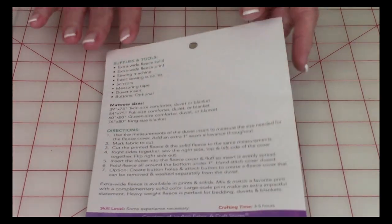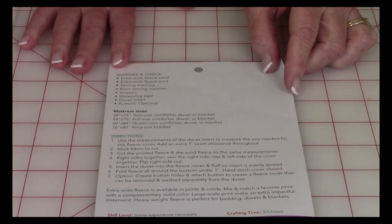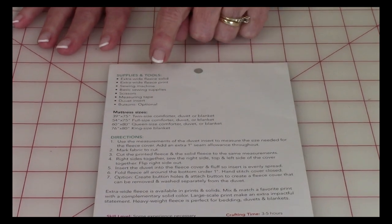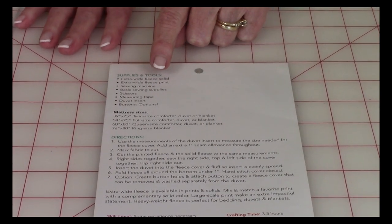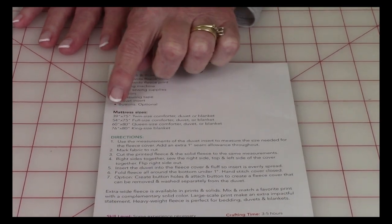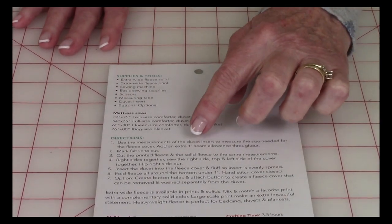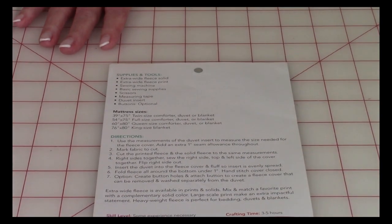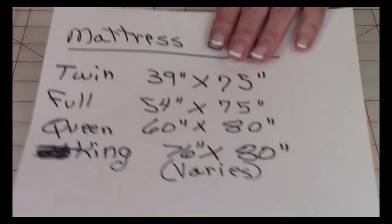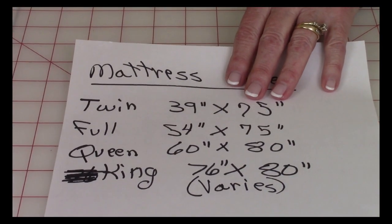Now, on the back, it gives you very general information, and I'll blow this up in a moment. It talks about using extra-wide fleece for this duvet cover. It gives you mattress sizes and just some general sewing instructions on how to put it together. So this is what's on that little flyer there so that you can read it.